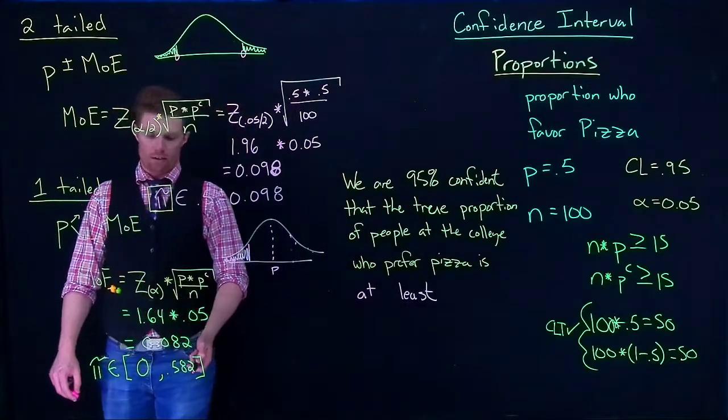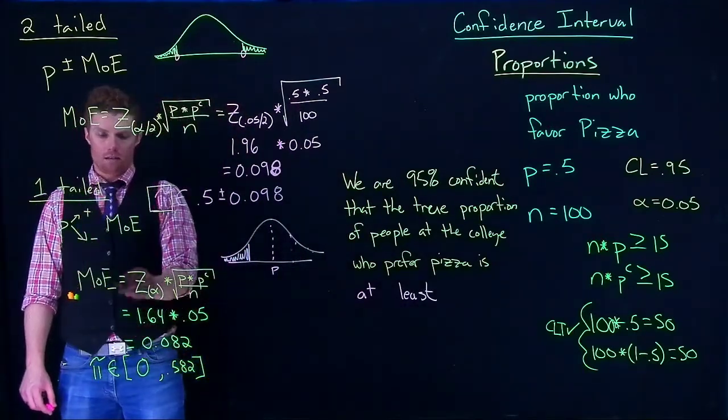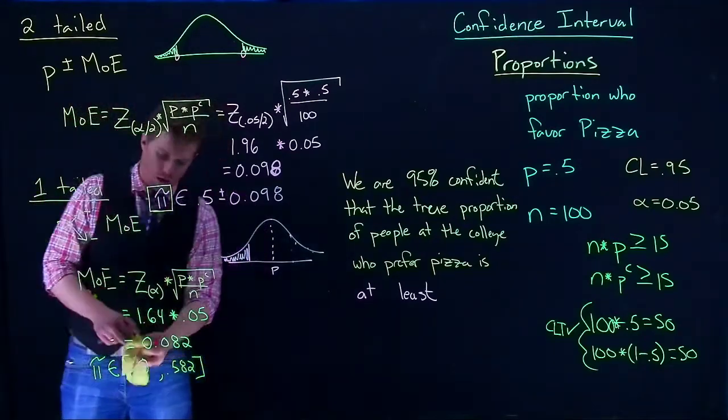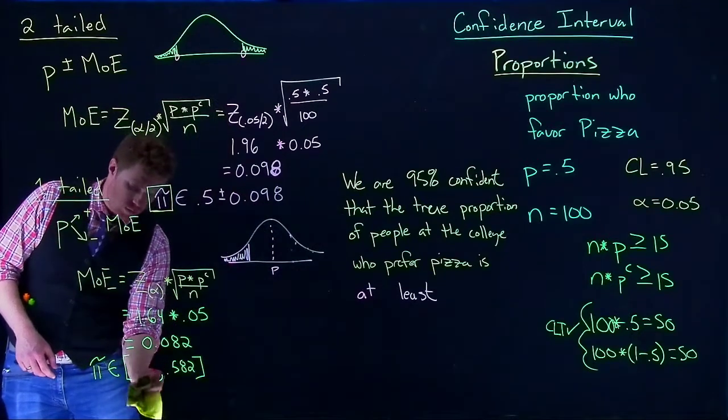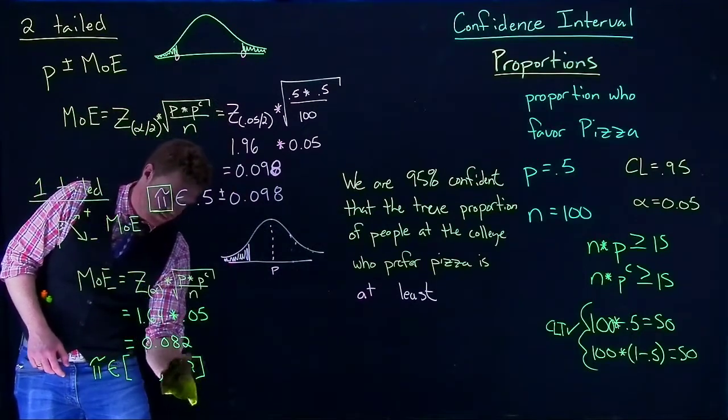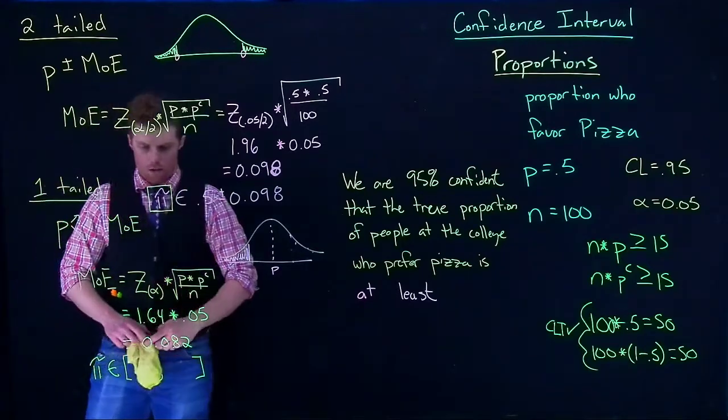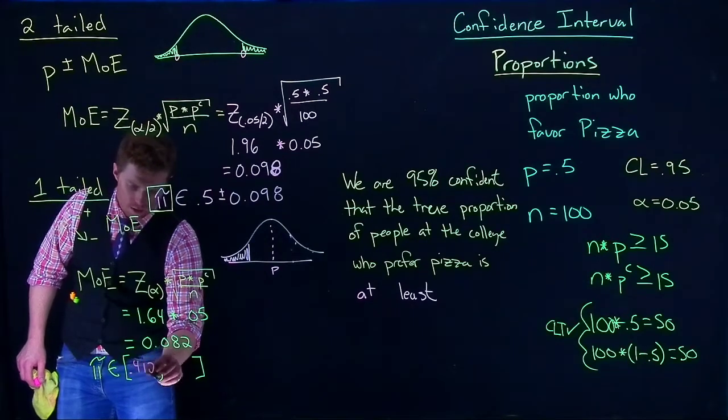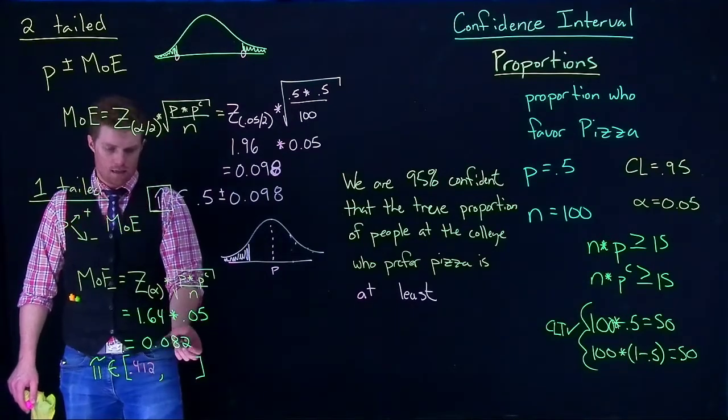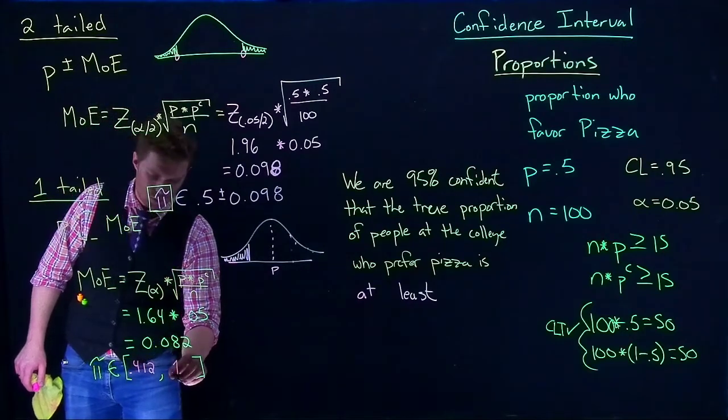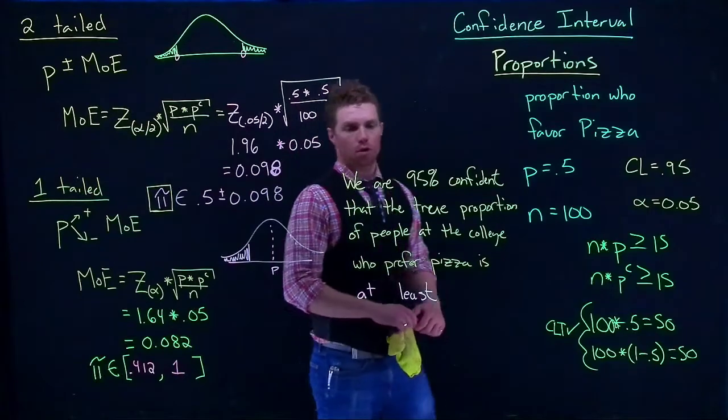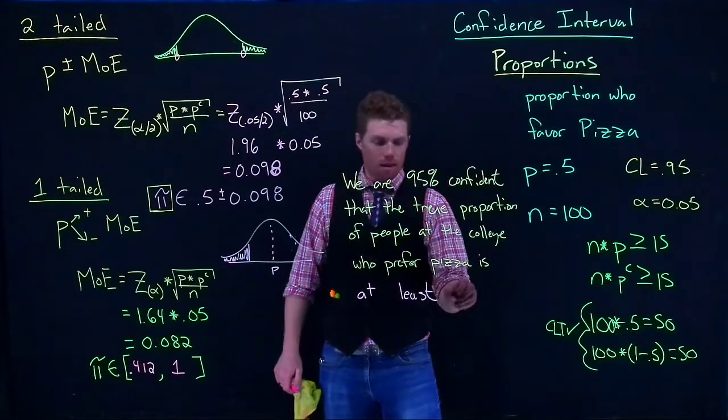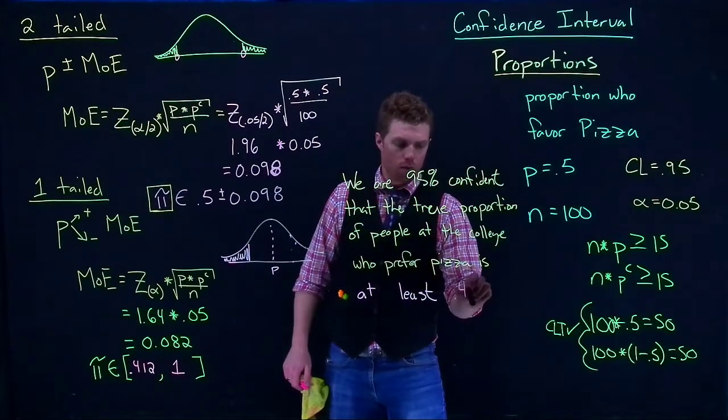The only thing that's different is instead of adding our margin of error, I'm just going to subtract this margin of error. Now this is going to be equal to 0.418, and this is going to be equal to 1, because that's the upper bound on our proportion. So I'm 95% confident that the true proportion of people at the college who prefer pizza is at least 0.418.